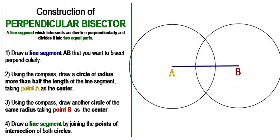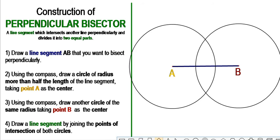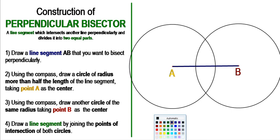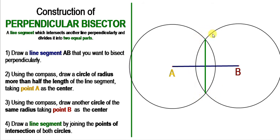Now the last step is to draw a line segment by joining the points of intersection of both circles. The two circles intersect at two points. Join these two points of intersection by drawing a straight line from one intersection point to the other. This line is the perpendicular bisector.